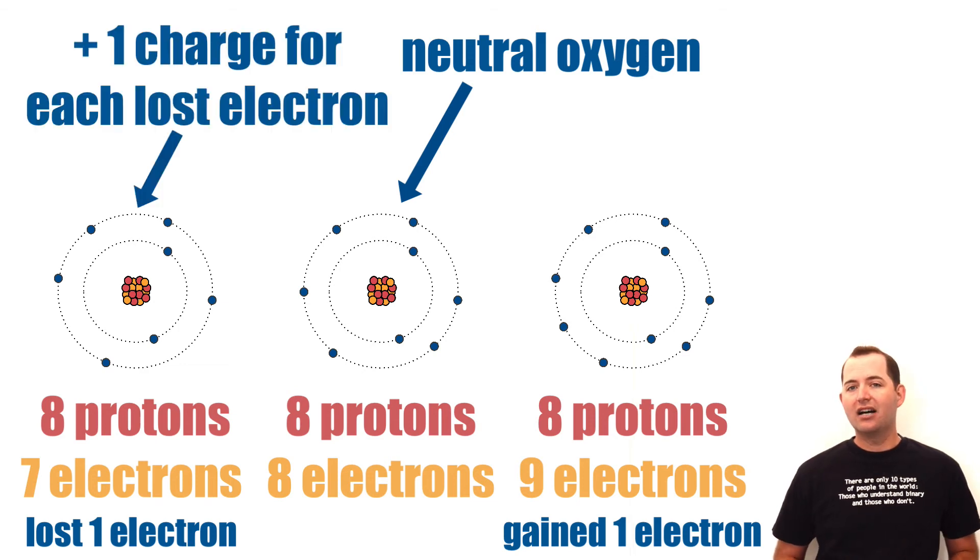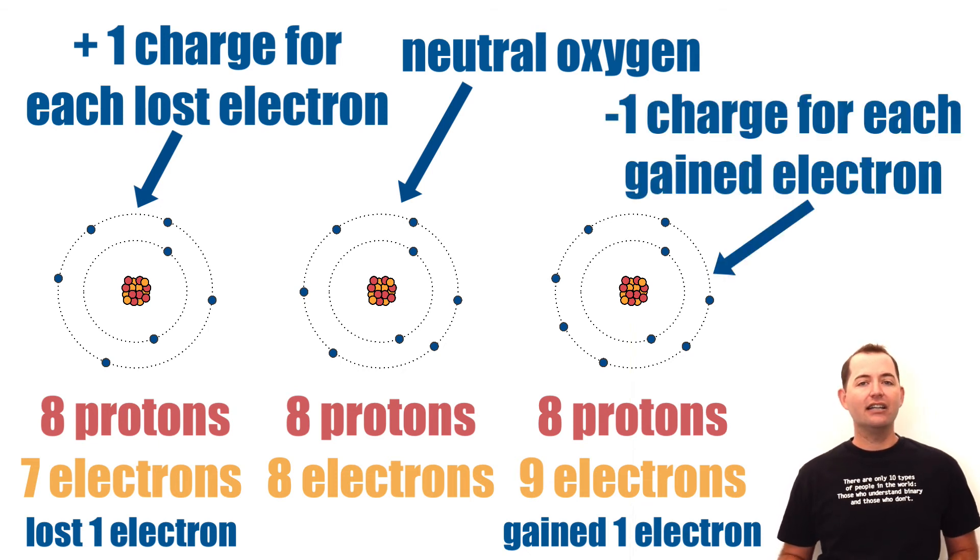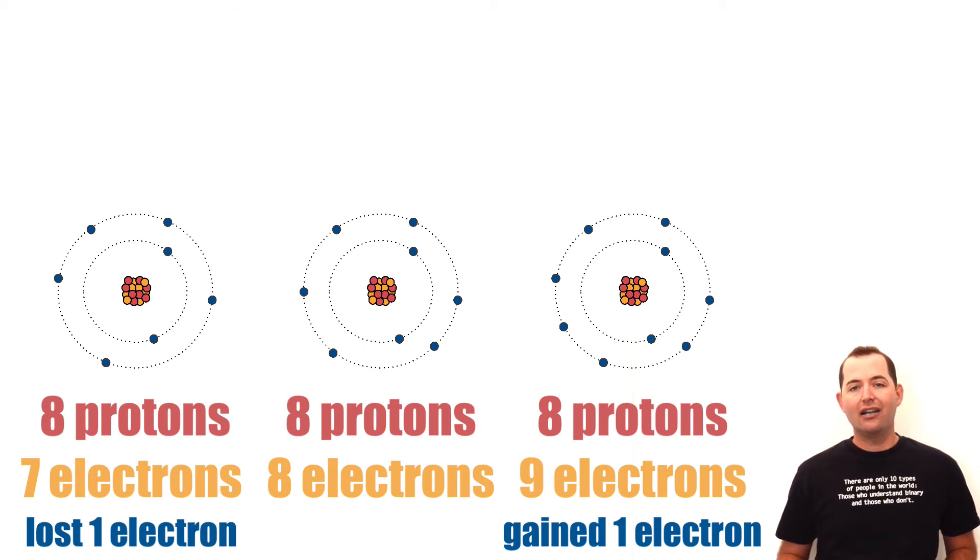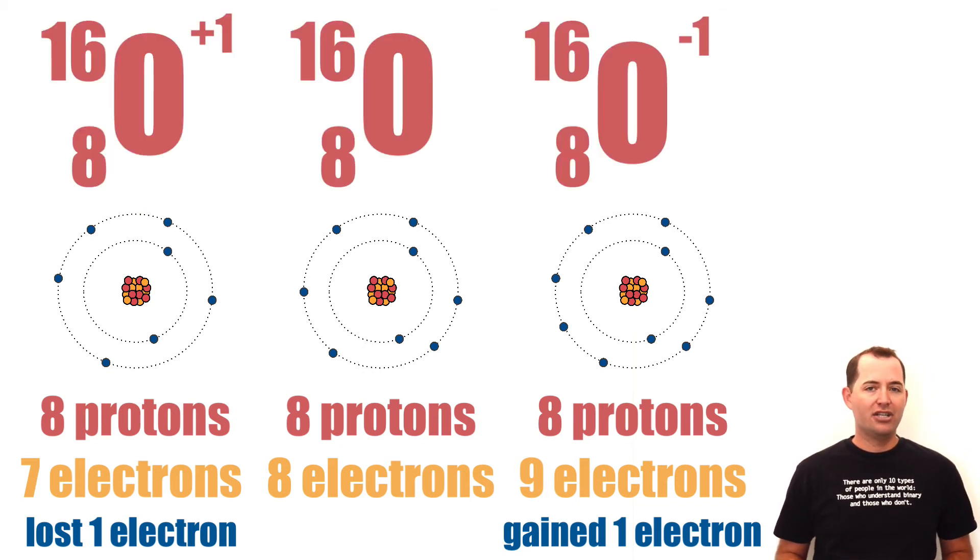For each lost electron, the resulting ion will have a plus one charge. And for each gained electron, the resulting ion will have a minus one charge.